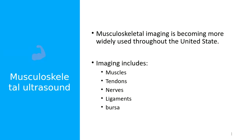Musculoskeletal imaging is pretty common, but it's highly specialized. You really would have to know what you're looking at as far as details of the muscles. What's included in these types of exams would be imaging muscles, tendons, the nerves, ligaments, and the bursa pockets.